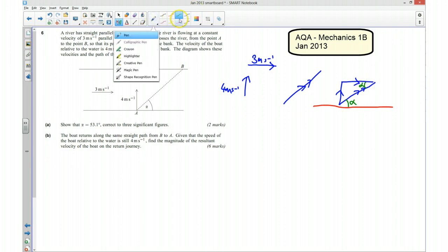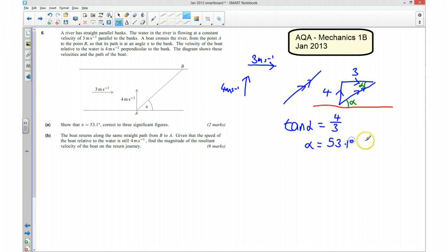We know that this here is 4 and this here is 3. So I can work out that by saying that the tan of alpha is going to be equal to the opposite divided by the adjacent, so it's going to be 4 over 3. And if you put that into your calculator, alpha works out to be 53.1 degrees.